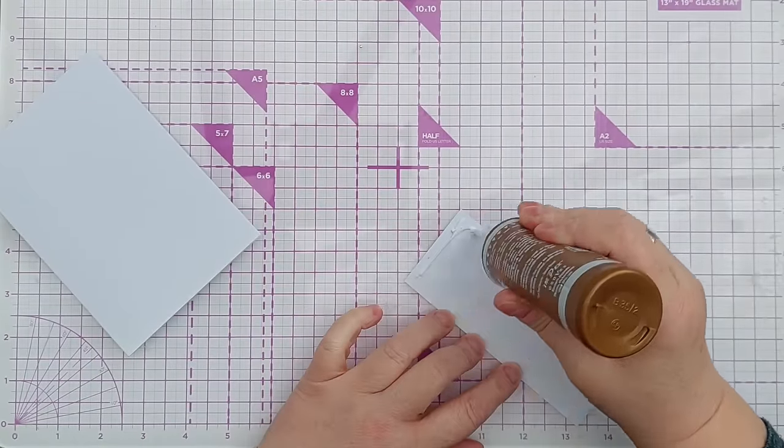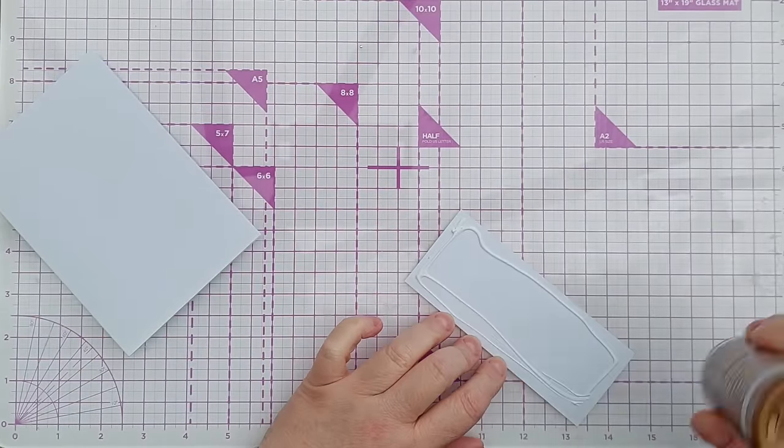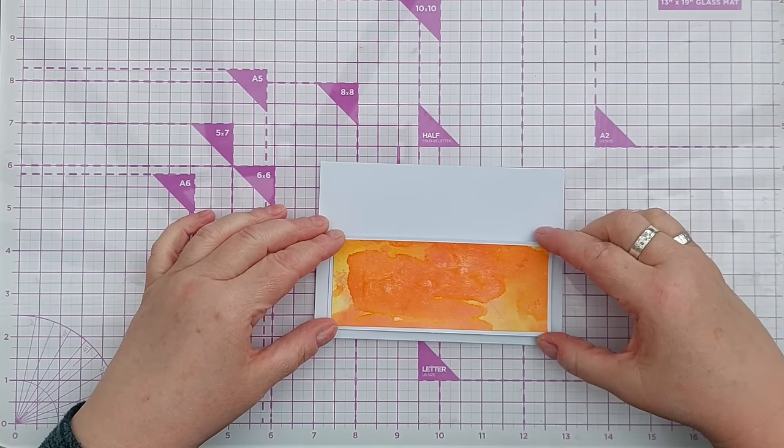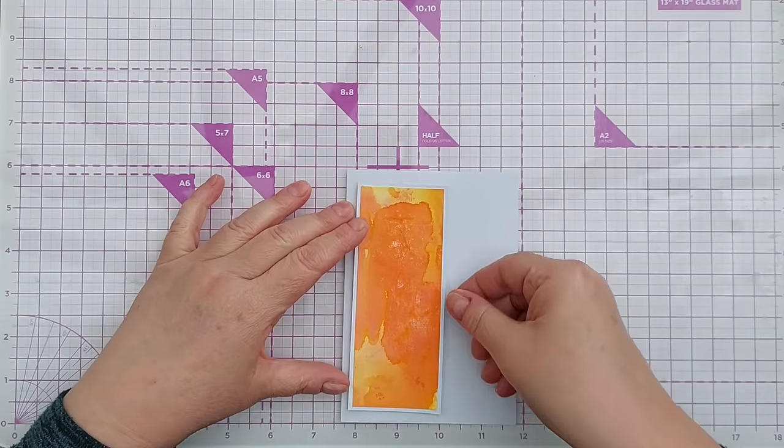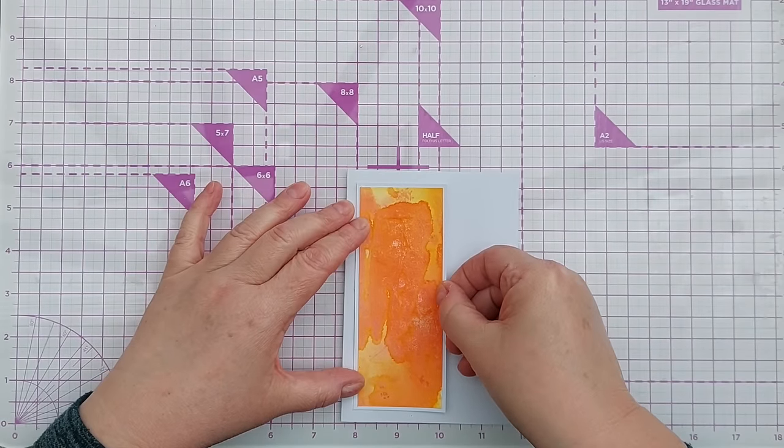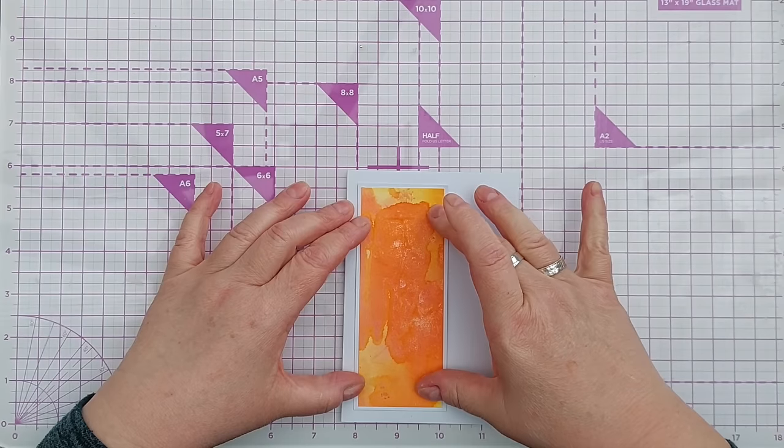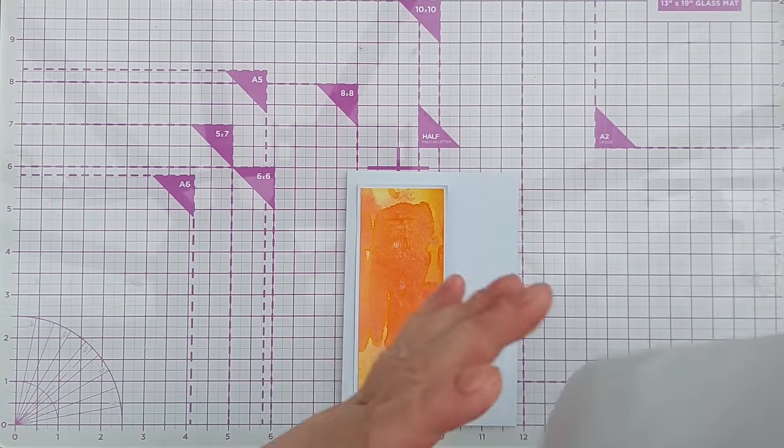Once that was done I then added my bright orange panel to the left hand side of the card and now I've still got a nice bold pop of colour but I've also got lots of white space so that that boldness isn't quite as overwhelming as it would otherwise be.